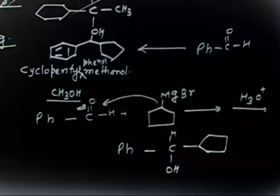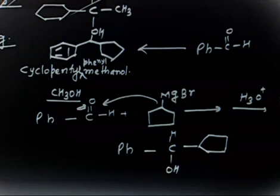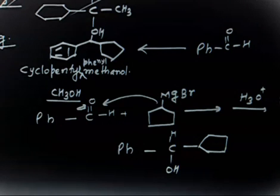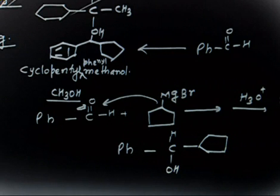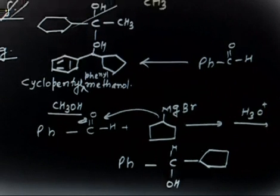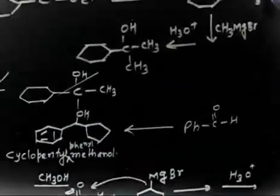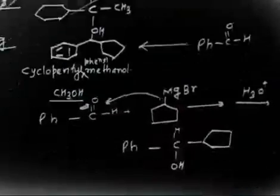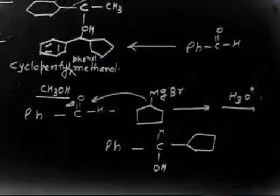In summary: Grignard reagent reactions with aldehydes or ketones can be used to prepare primary, secondary, or tertiary alcohols. To increase the chain by one carbon, use formaldehyde. To increase by two carbons, use ethylene oxide. For larger additions, choose the correspondingly sized carbonyl compound. These are the key strategies for Grignard synthesis problems.